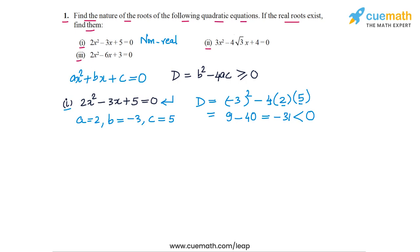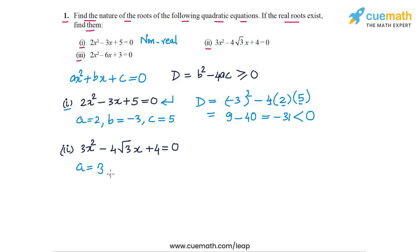Now let's go to part two. In part two the equation is 3x² - 4√3·x + 4 = 0. The coefficients in this case are: a = 3, b = -4√3, and c = 4.